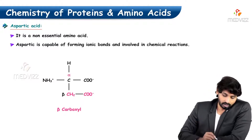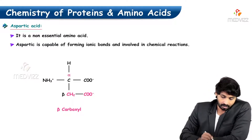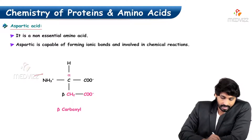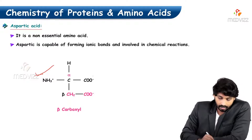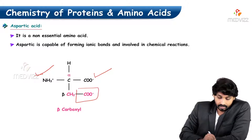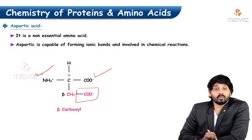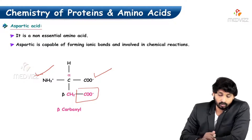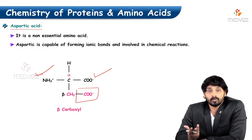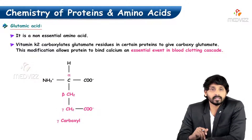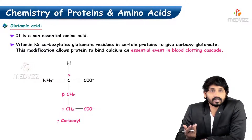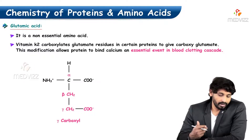Looking at the structure of aspartic acid, regular amino acids have a regular amino group and regular carboxylic group, but here they carry an extra carboxylic group compared to the regular one. That's why they are more acidic — two carboxylic groups make the substance more acidic. Coming to glutamic acid, it is also a non-essential amino acid.